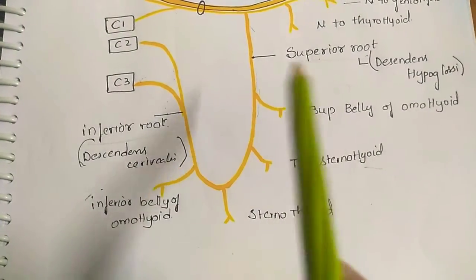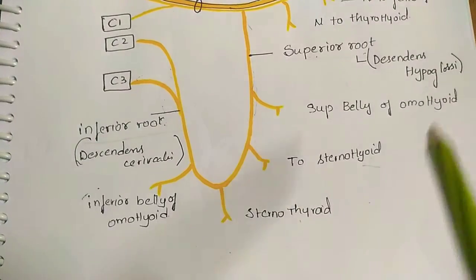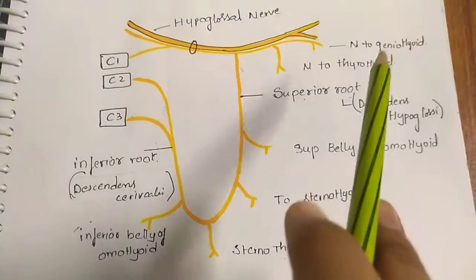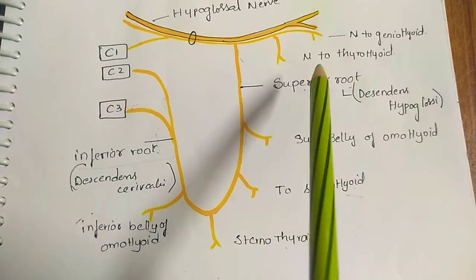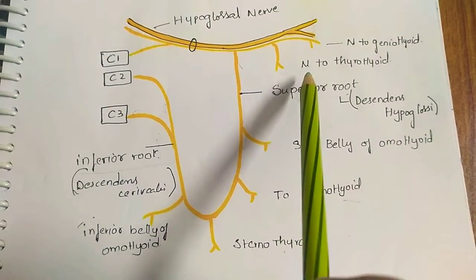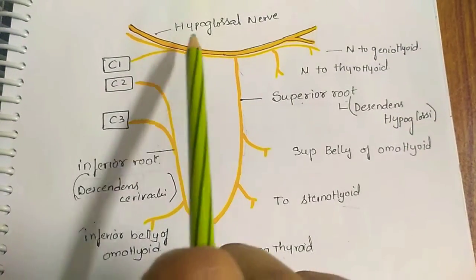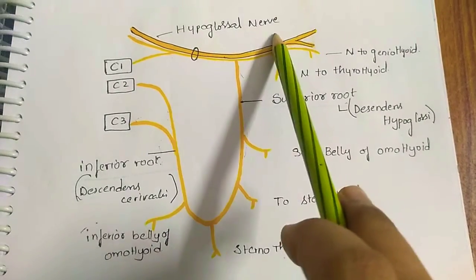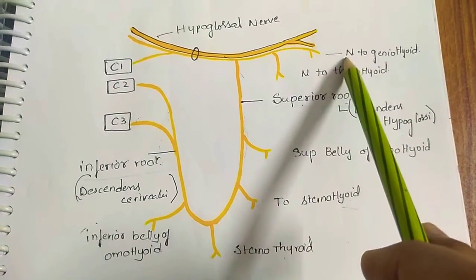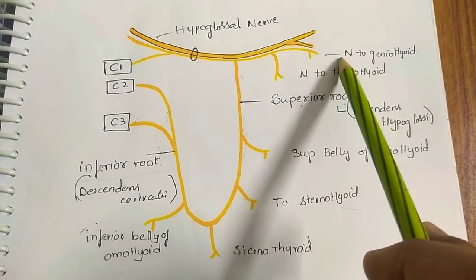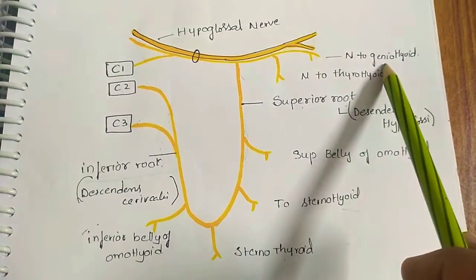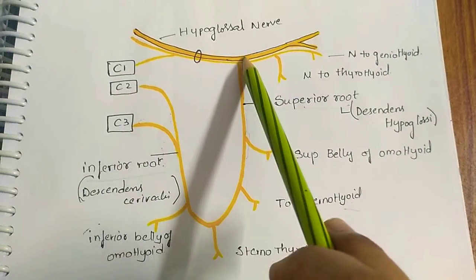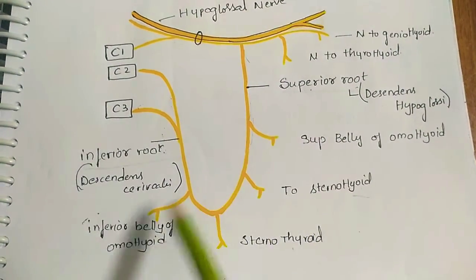This U-shaped loop supplies all the infrahyoid muscles except the thyrohyoid, which is supplied by the nerve to thyrohyoid from the hypoglossal nerve. The hypoglossal nerve also gives another branch called the nerve to geniohyoid, and the C1 segment continues with the ansa cervicalis.